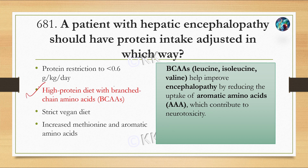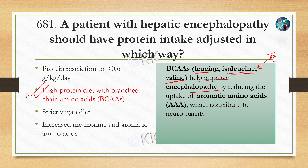High protein diet with branched-chain amino acids. Branched-chain amino acids include leucine, isoleucine, and valine. These three are branched-chain amino acids. They help in improving encephalopathy by reducing the uptake of aromatic amino acids which contribute to neurotoxicity.